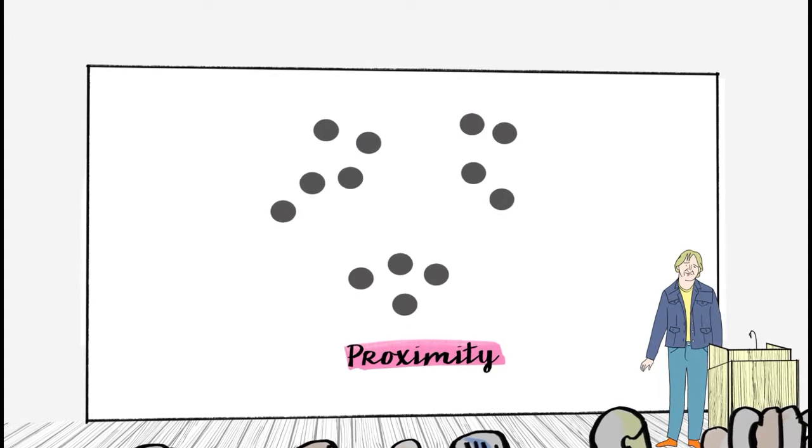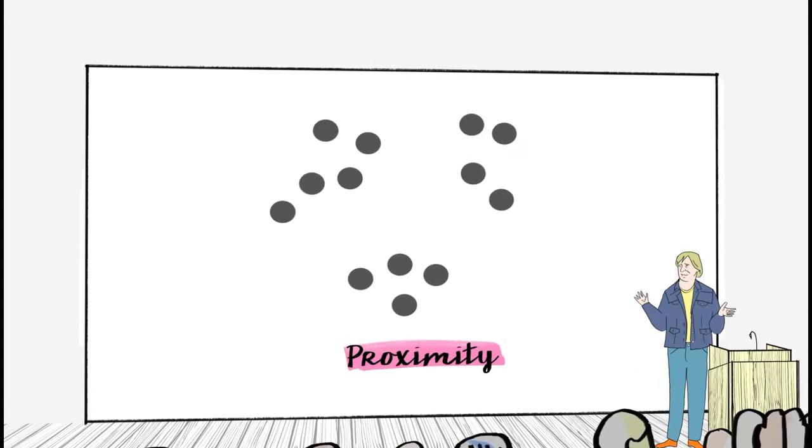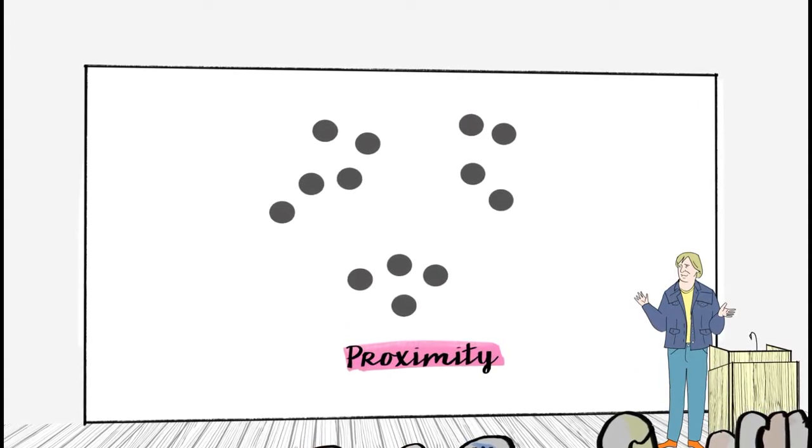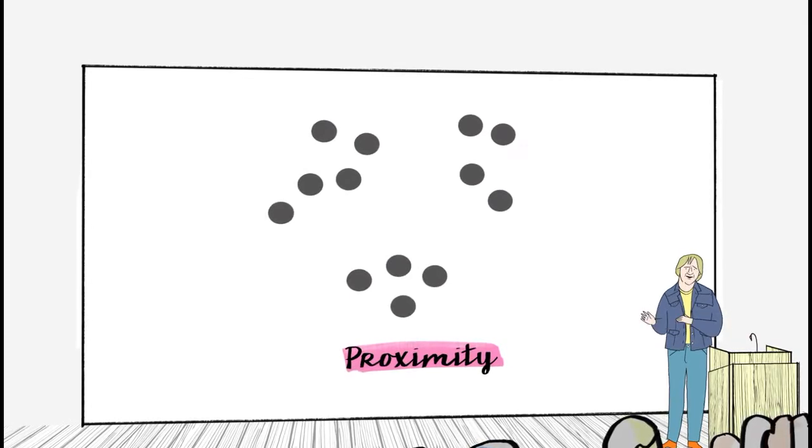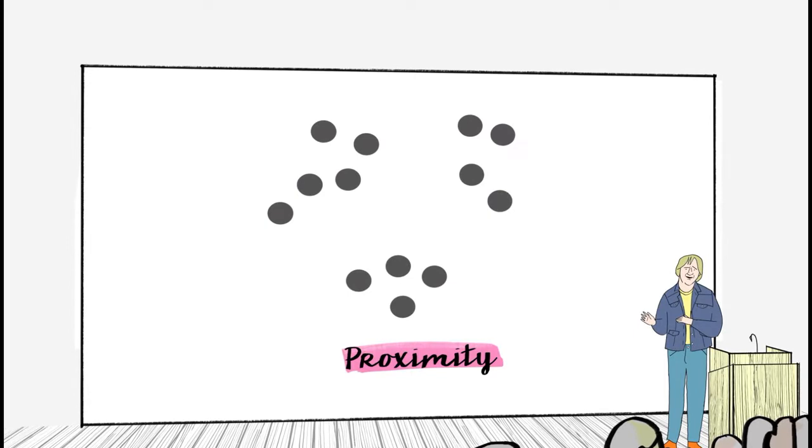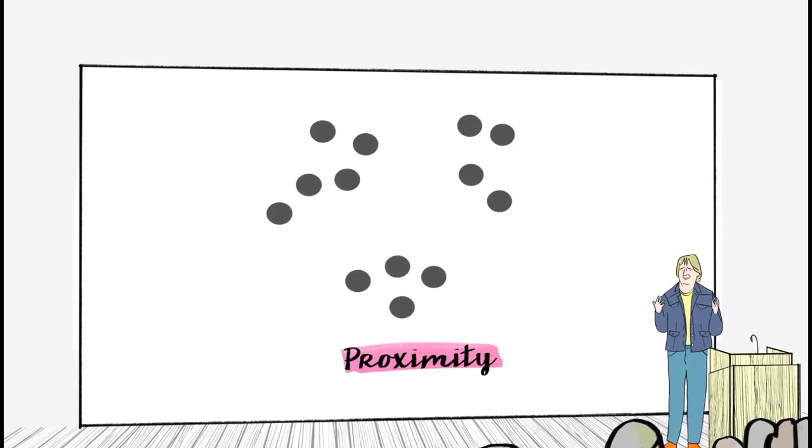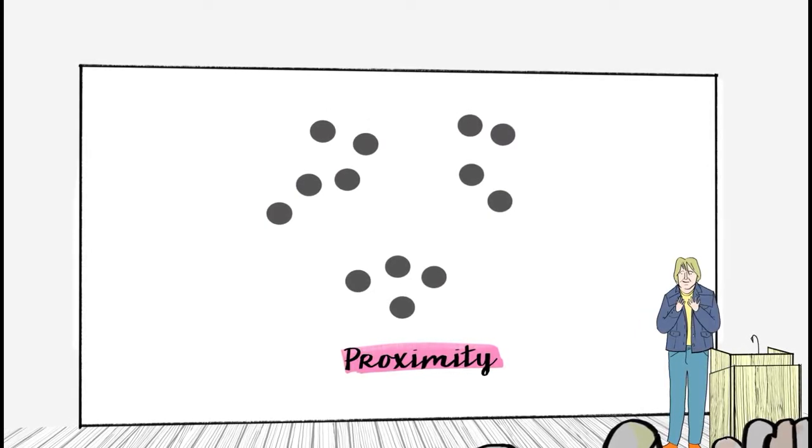So you would naturally see this. There's an indefinite number of ways you could, in principle, break up these circles. But the natural temptation is to say there's three groups. And we segment these into three groups because the objects naturally cluster together as being close in space.